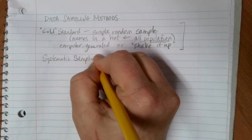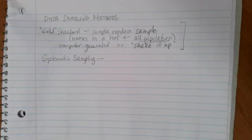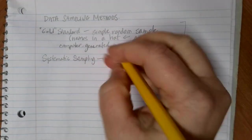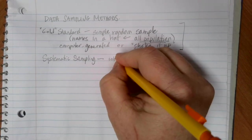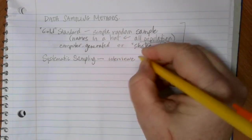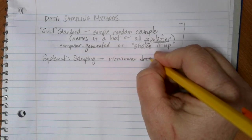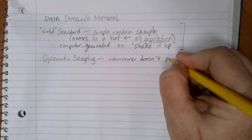Systematic sampling introduces an element of randomness to it because the person interviewing is not doing the pick. The interviewer doesn't pick the group, doesn't pick who they talk to.